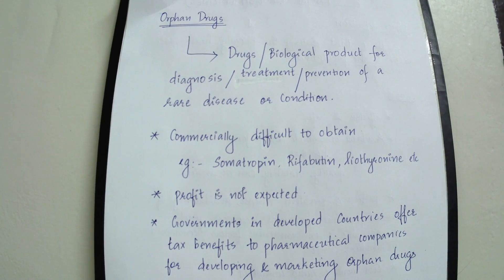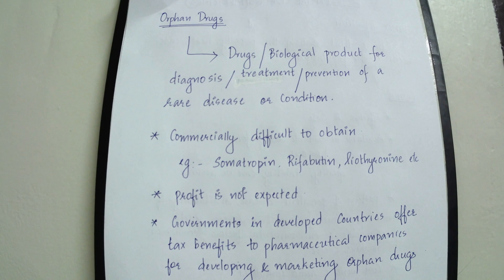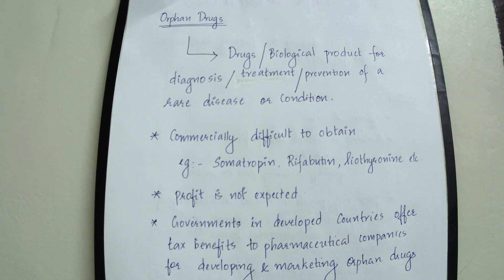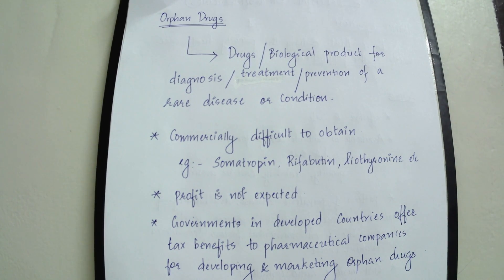Next, let us see what orphan drugs are. Whenever the term orphan drugs comes to mind, just connect it with the term rare disease. Orphan drugs are drugs or biological products used for the diagnosis, treatment, or prevention of a rare disease or condition. However, these drugs are commercially difficult to obtain, and pharmaceutical companies don't expect much profit from them. In certain developed countries, the government offers tax benefits to pharmaceutical companies to develop and market orphan drugs.